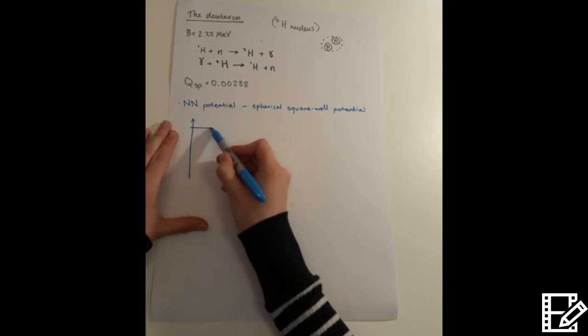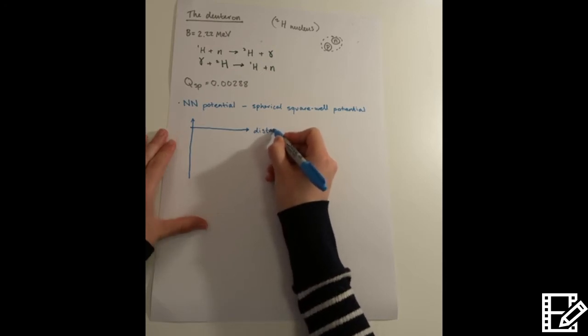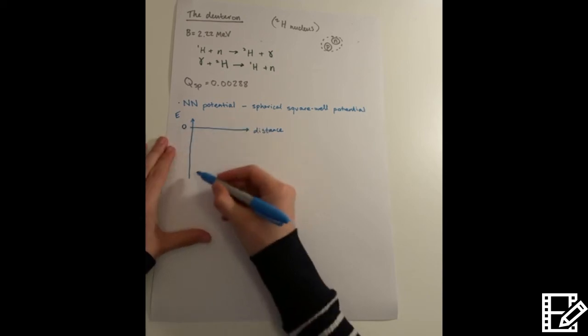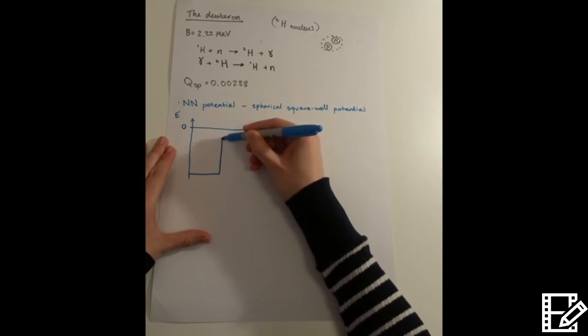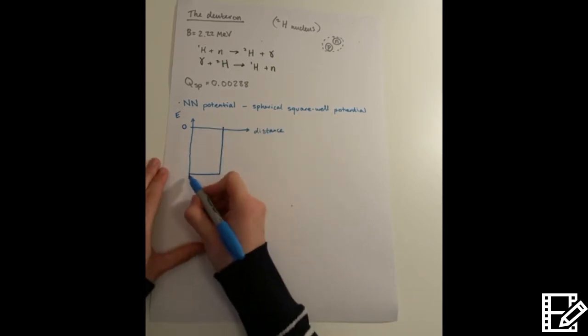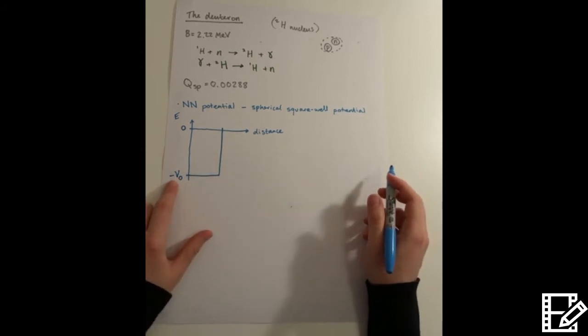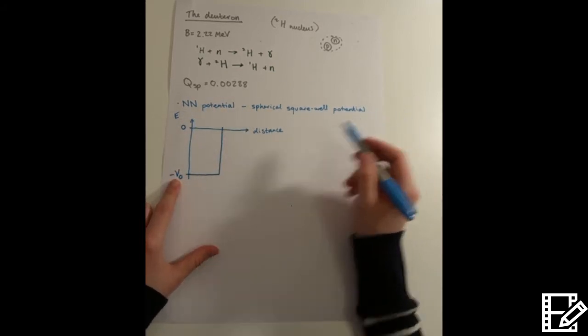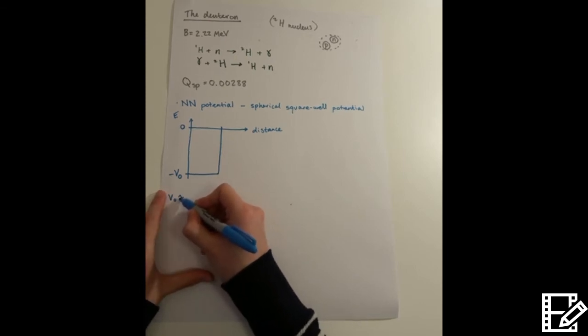We estimate it as a spherical square well potential. So this is the distance, this is our energy, here's zero. And the depth of the square well is equal to minus V naught. This tells us something about the strength of the potential or the interaction between the nucleons. And it turns out that V naught is actually approximately 35 MeV.